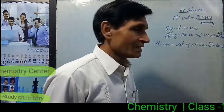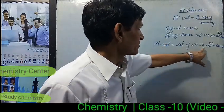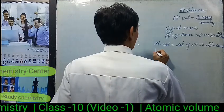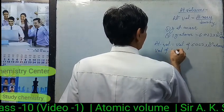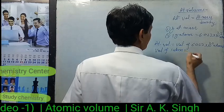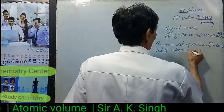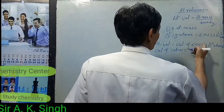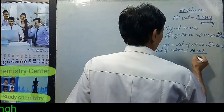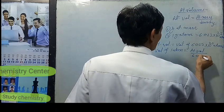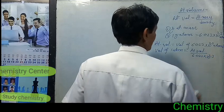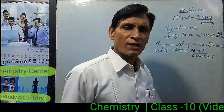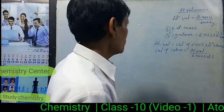If you want to calculate the volume of one atom of the element, then: Volume of one atom = Atomic Volume divided by Avogadro's number (6.022 × 10²³). This gives the volume of a single atom of the element.